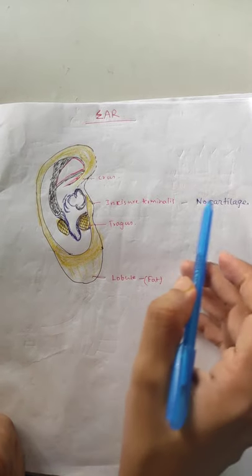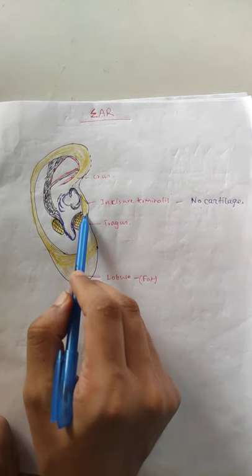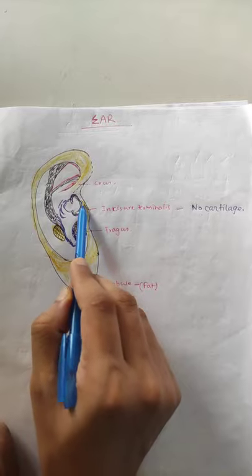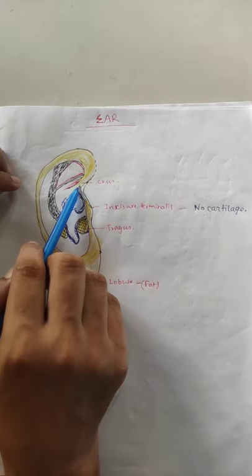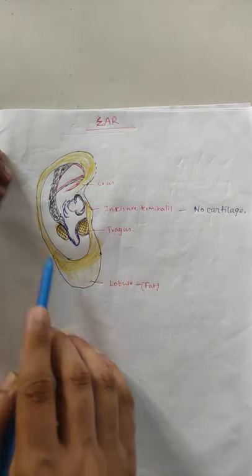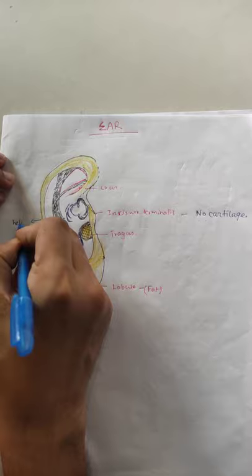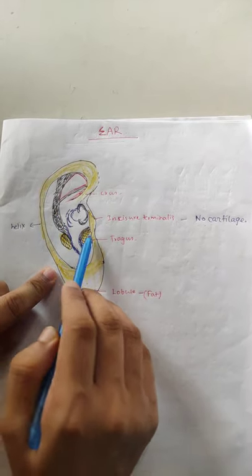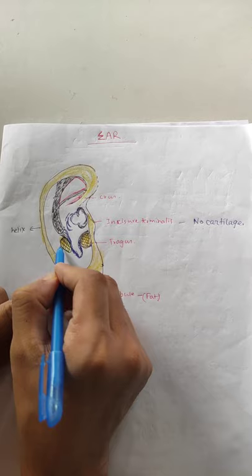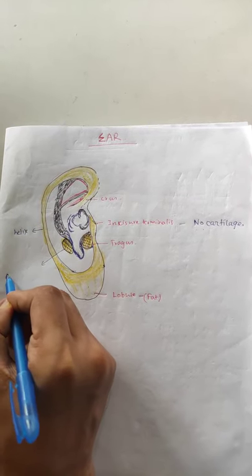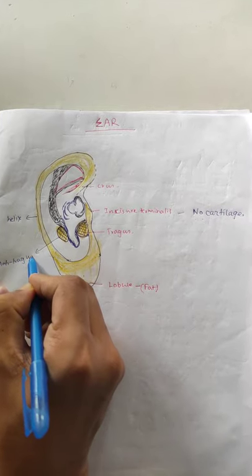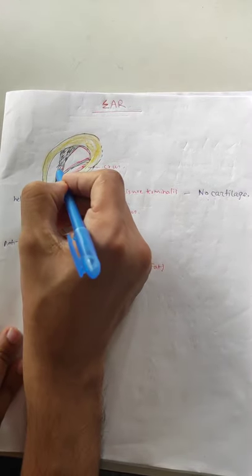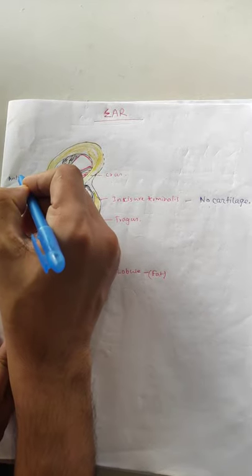It is important to know that the Incisura Terminalis is not cartilage — it is called 'No Cartilage.' This is surgically important. The outer curved rim of the pinna is called the Helix.